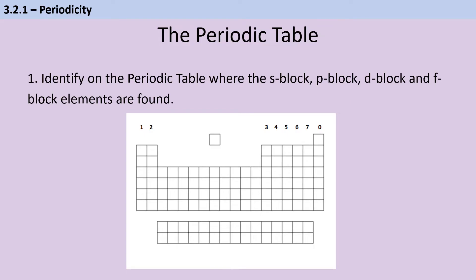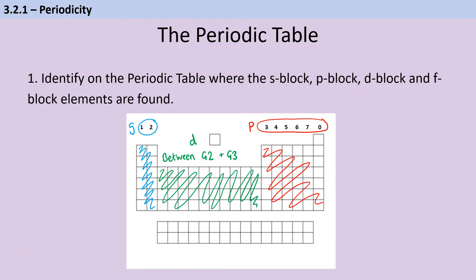The first thing you need to be able to do for the periodicity topic is identify the different blocks within the periodic table. The S-block contains elements in group 1 and group 2. The P-block contains elements in groups 3 to 0. The D-block is found between groups 2 and 3, containing all the transition elements, plus zinc, cadmium, and mercury. Finally, down the bottom, we have the lanthanides and actinides, which are the F-block.